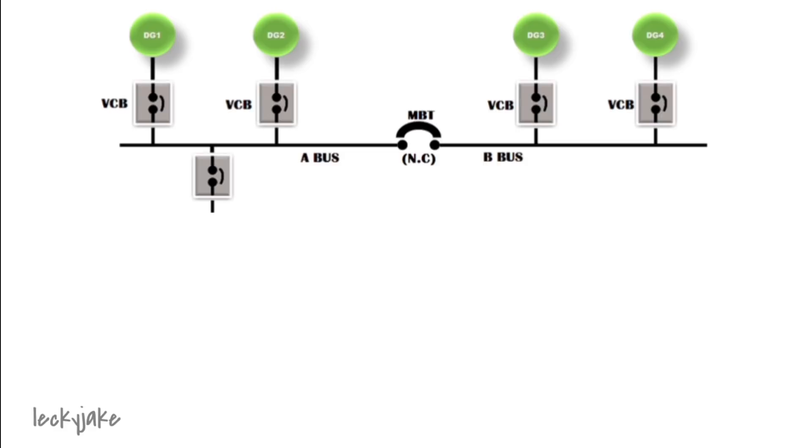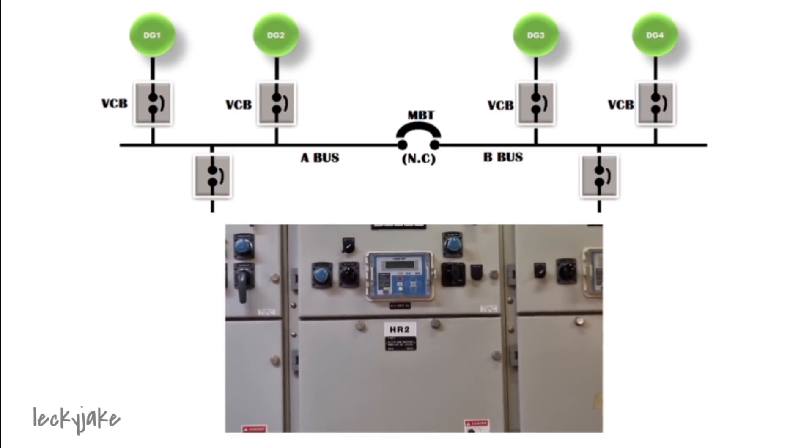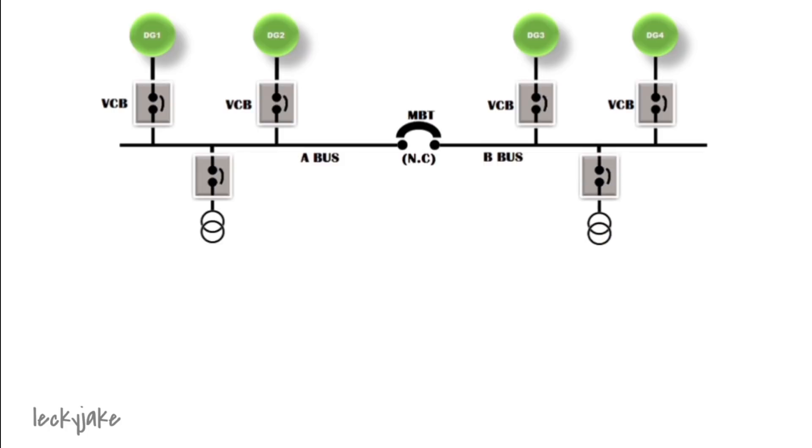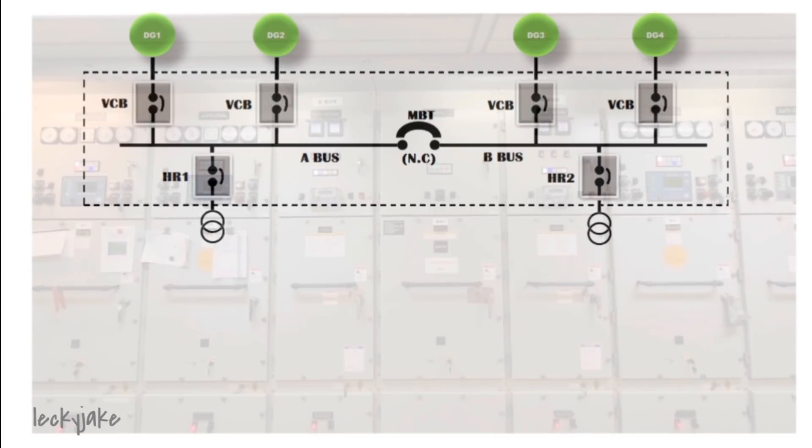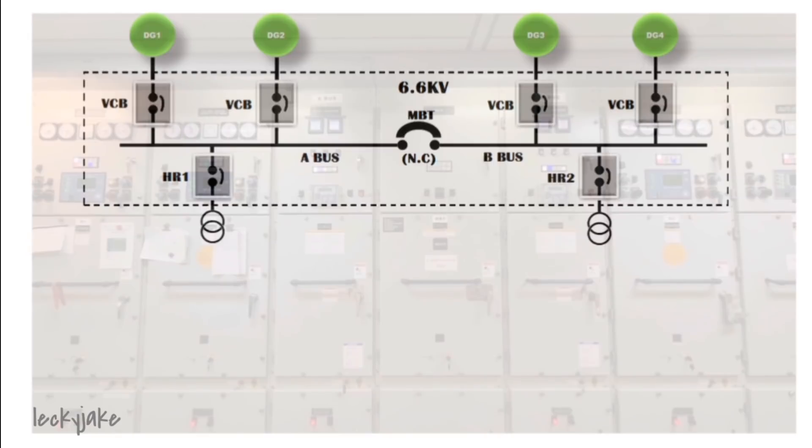And then this group is connected into a high voltage vacuum circuit breaker before the transformer. Since this is a Korean built vessel, they are using HR1 and HR2 symbol for this high voltage circuit breaker. So what you are seeing right now is the 6600 volts main switchboard setup.